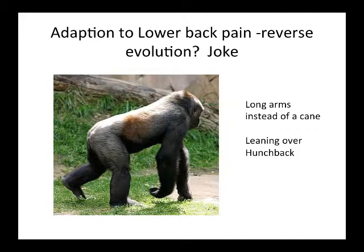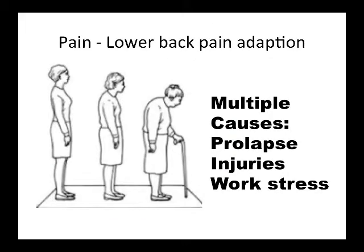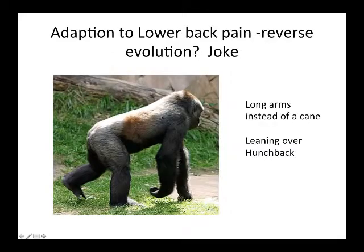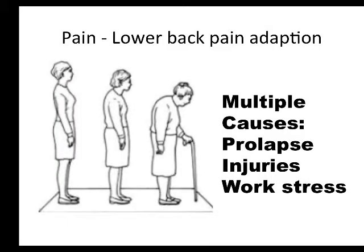Now there are physical adaptations that are also secondary defenses. This is a joke — maybe those of us who can't seem to stand up straight because we have lower back pain are in reverse evolution. The gorilla came before us, he has long arms instead of a cane, and he's leaning over. When we have lower back pain, we start out young standing up straight, maybe our back hurts, but gradually we start looking like this middle-aged lady, and as she becomes elderly she actually looks a lot more like the gorilla.